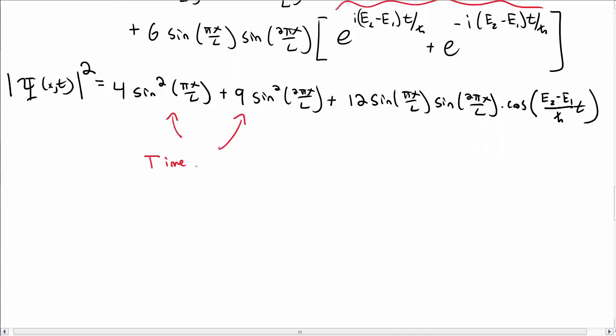Notice that these terms here are time-independent. So these are the usual stationary parts that I would have had, but I have time dependence in this third term. And usually we interpret that as an interference term between the n equals 1 and n equals 2 states. We also sometimes call it sloshing of the wave function with time, because the wave function won't be constant with time. It'll oscillate back and forth.